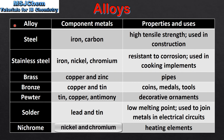Finally, we'll have a look at some examples of alloys, their component metals, and their properties and uses. Steel is composed of iron and carbon and is used in construction. Stainless steel is composed of iron, nickel and chromium and is used in cooking implements. Brass is made of copper and zinc and is used in pipes. Bronze is made of copper and tin and is used in coins, medals, tools and statues.